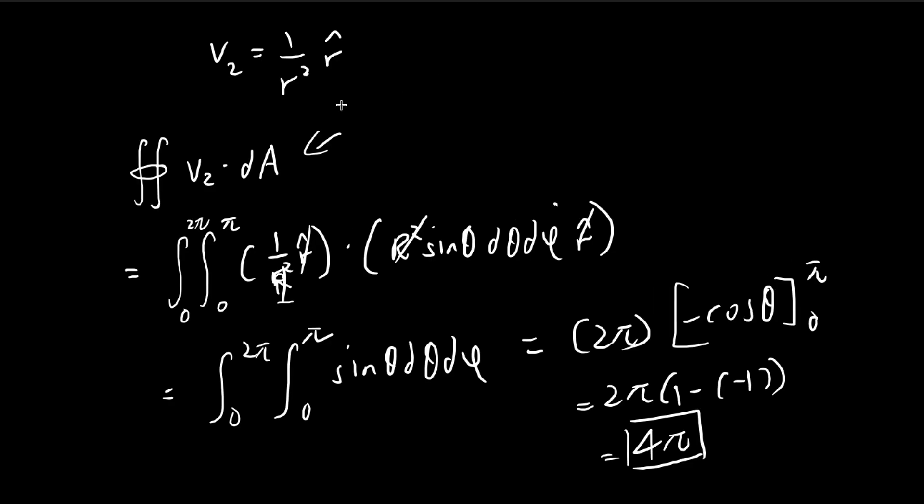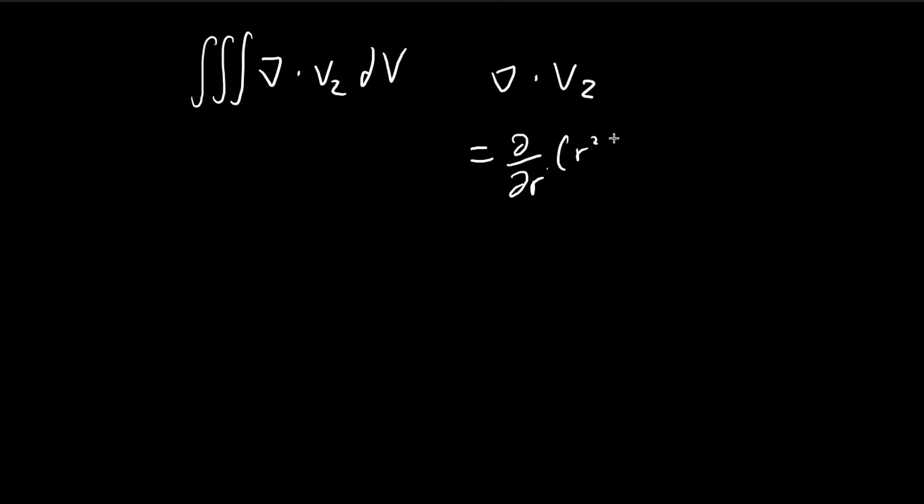Once we do the volume integral of the divergence, you would expect to get an answer equal to 4π as well. If we calculate the divergence, we're in spherical coordinates. The formula is 1 over r squared times the partial derivative with respect to r times r squared times the r component of this vector. For this vector field, it's 1 over r squared times r squared. That's the formula for divergence in spherical coordinates.